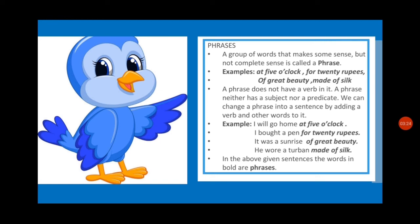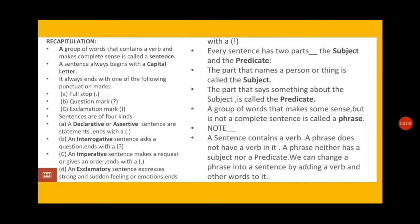So children, keep in mind that a sentence contains a verb but a phrase does not have a verb in it. A phrase neither has a subject nor a predicate, but we can change a phrase into a sentence by adding a verb and other words to it. Now let us recapitulate lesson one of grammar. A group of words that contains a verb and makes complete sense is called a sentence. A sentence always begins with a capital letter and ends with a punctuation mark.